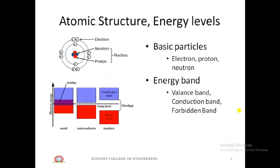Now we look at atomic structure and energy levels as basic concepts. Atoms have three basic particles: electrons, protons, and neutrons. Protons and neutrons combine to form the nucleus, and electrons revolve around the nucleus in fixed orbits named K, L, M, N shells. Each orbit has a definite number of electrons — the first orbit has two electrons, the second has eight electrons.